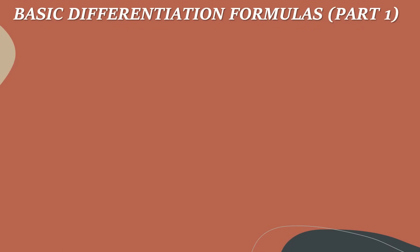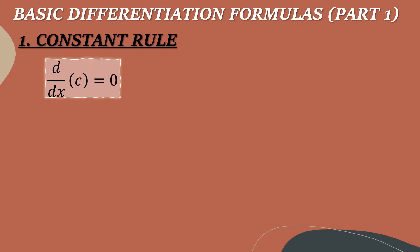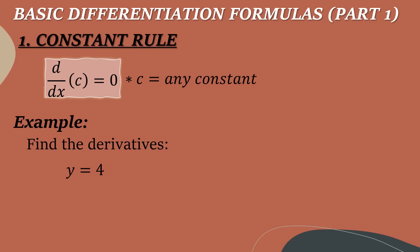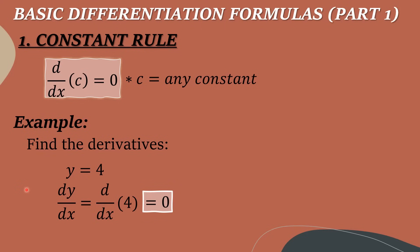Let us proceed to the first rule or formula, that is the constant rule. The formula for the constant rule is: derivative of C with respect to X equals 0, wherein C is any constant or any number. For example, let us find the derivative of Y equals 4. Using the formula, since the given constant is 4, the derivative of any constant is always 0. Therefore, the derivative of 4 with respect to X is 0.